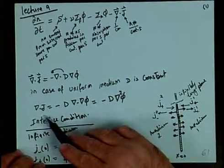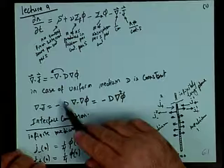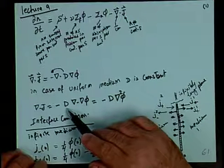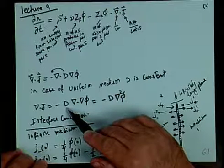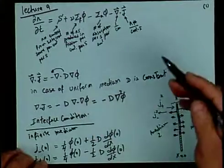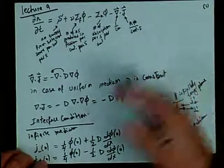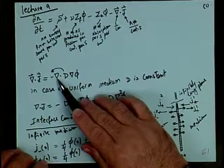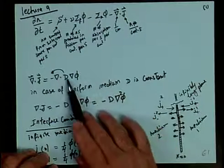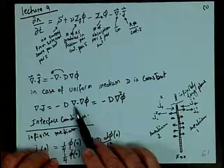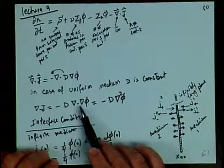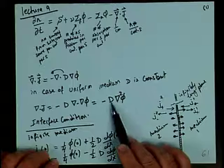This is why we call it the diffusion equation. Divergence J equals negative divergence of D grad phi. If the medium is uniform — meaning no dependence on the coordinates, homogeneous everywhere — then because divergence is just d/dx, d/dy, d/dz, you can take D outside. This gives you negative D divergence of del phi. The divergence of the gradient is just the Laplacian operator, so this gives you negative D nabla-squared phi.